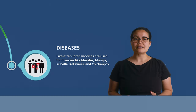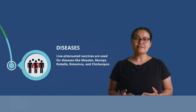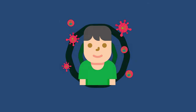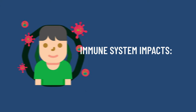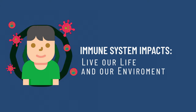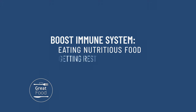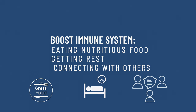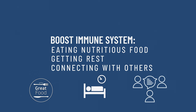Each of these diseases is caused by a virus, and a virus is a kind of germ that can make us sick. Within our bodies, each of us has an immune system that protects us from illnesses. The strength of our immune system is impacted by how we live our life and our environment. For example, by eating nutritious food, getting rest, and connecting with others, we can boost our immune system and stay healthy and strong.